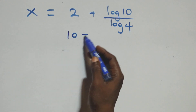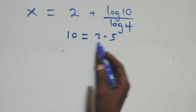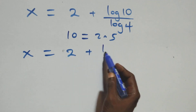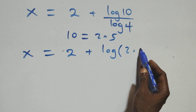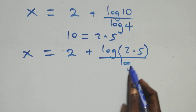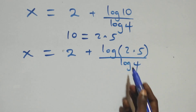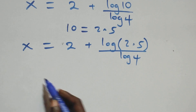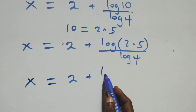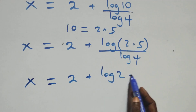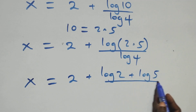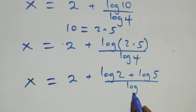Also, 10 can be written as 2 times 5, so x equals 1 plus log(2 × 5) over log 4. This follows the law of logarithms, giving us x equals 1 plus (log 2 plus log 5) over log 4.